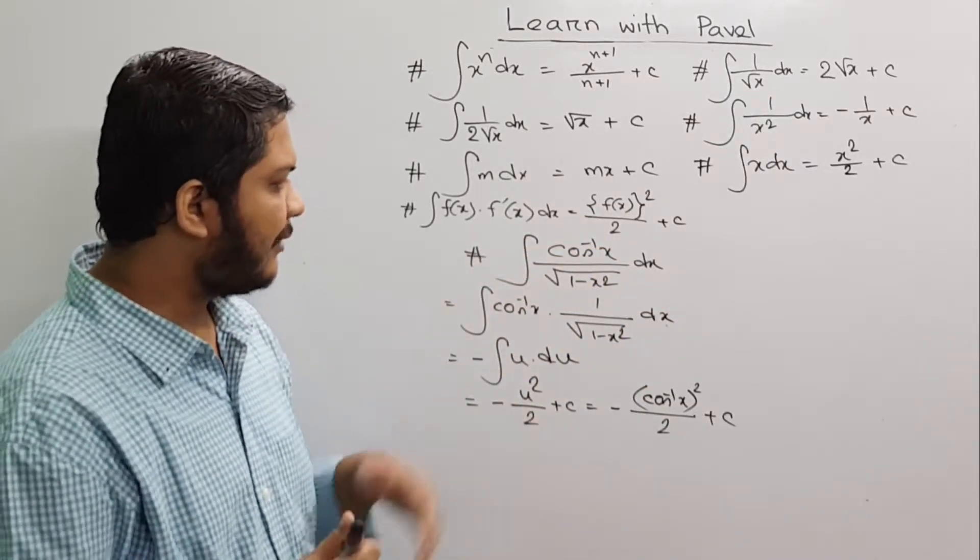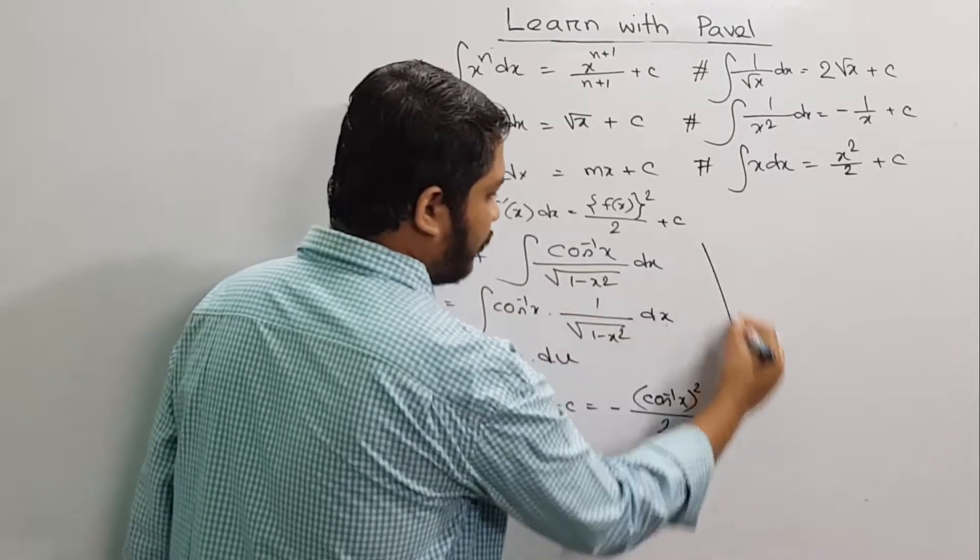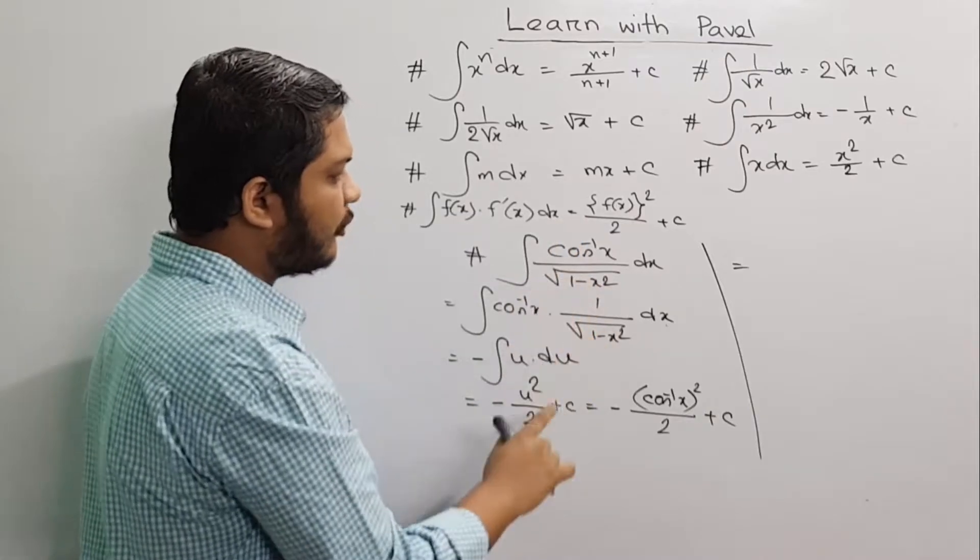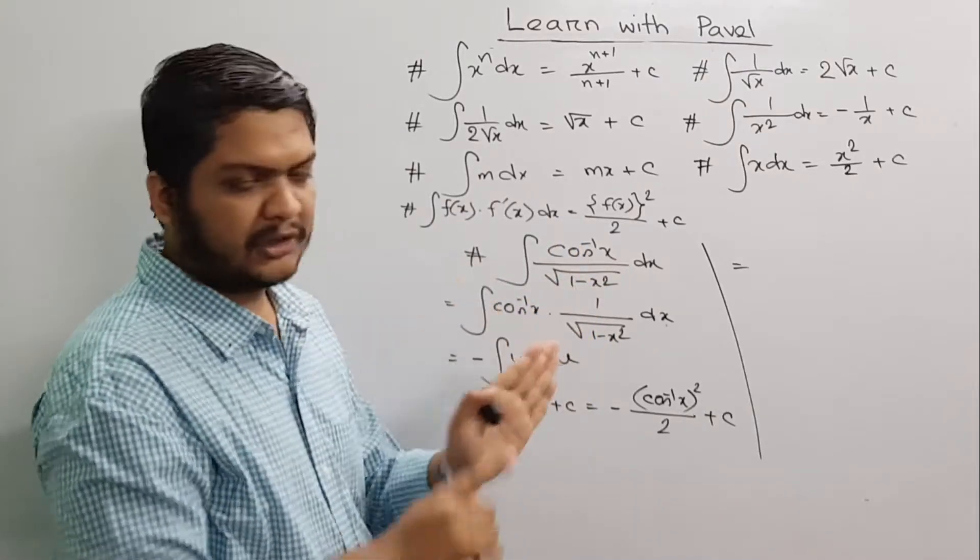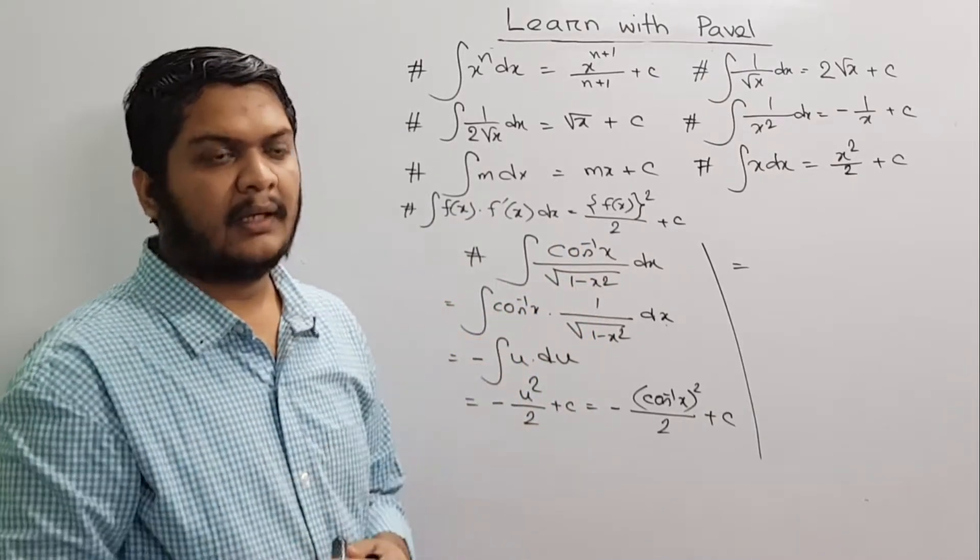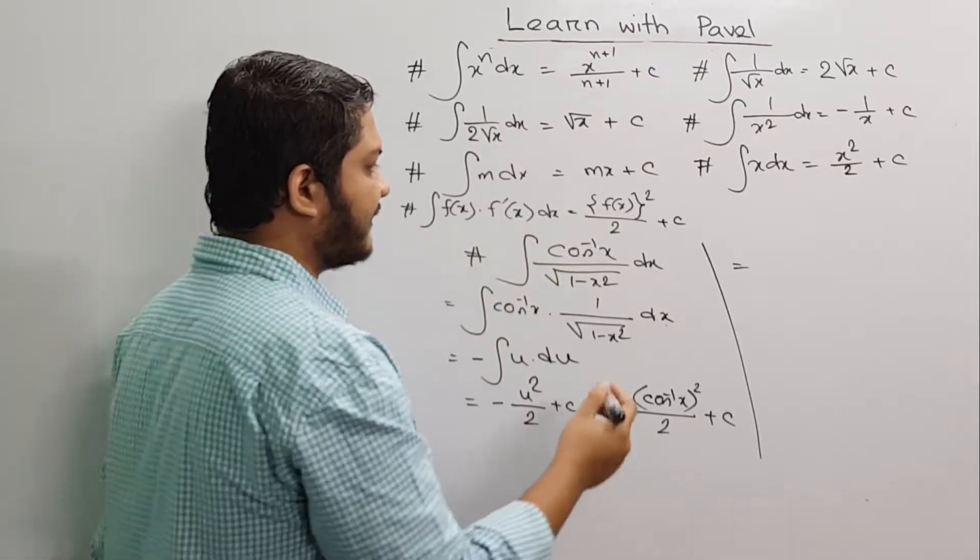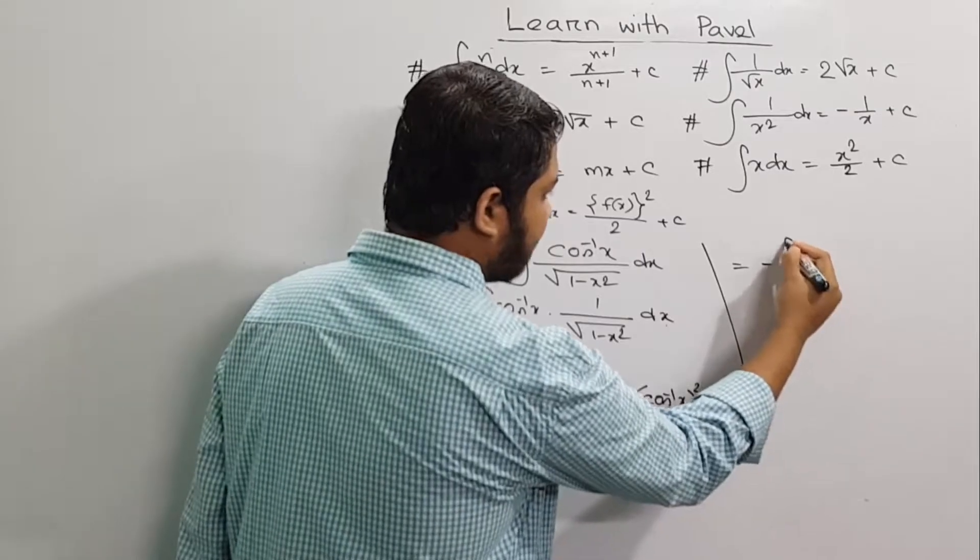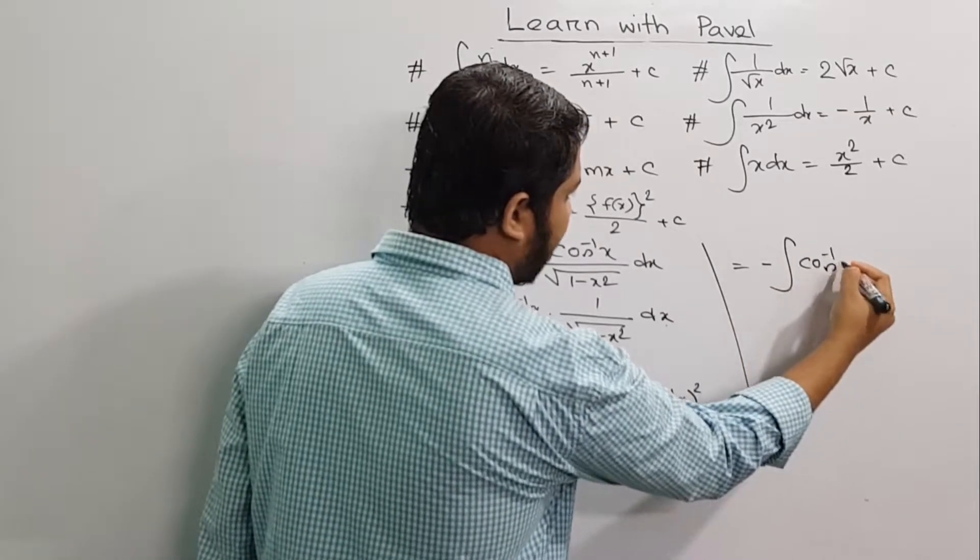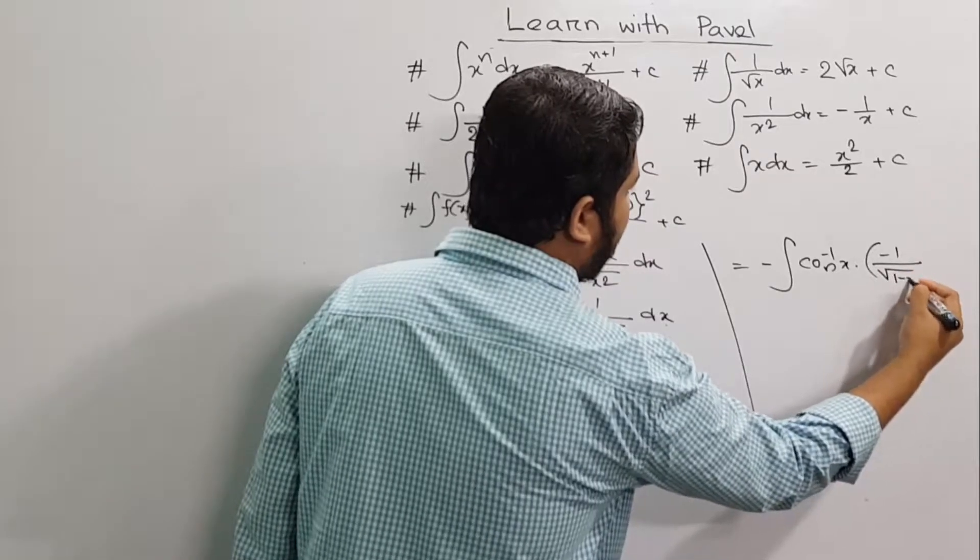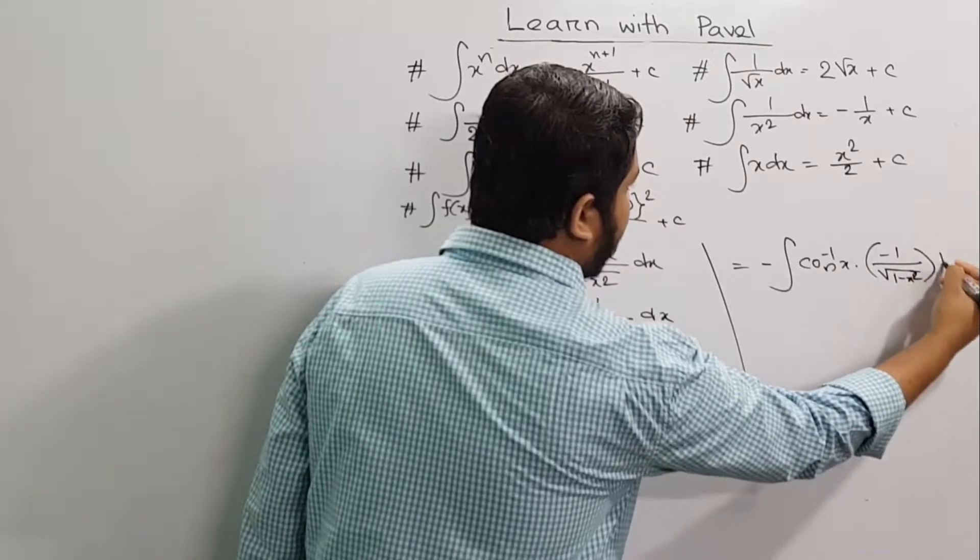We have to modify this system. We know that cos inverse x differentiation is minus 1 divided by root over 1 minus x square. This is minus integration of cos inverse x into minus 1 divided by root over 1 minus x square into dx.